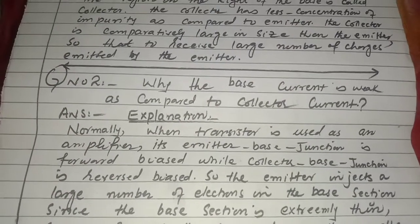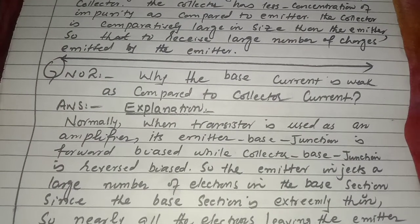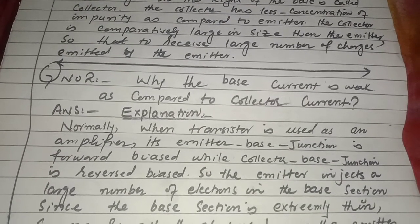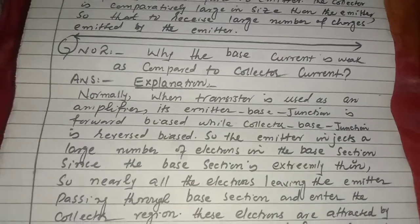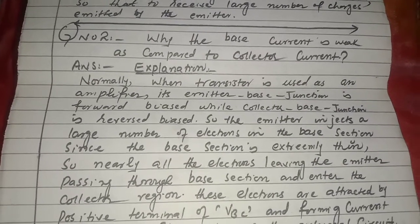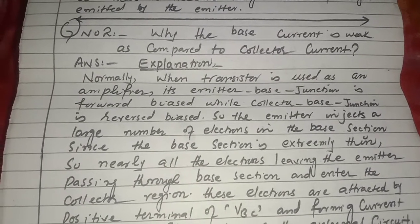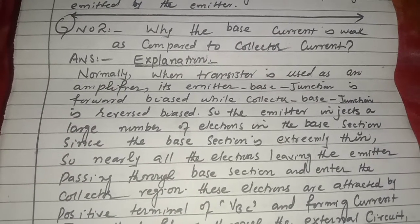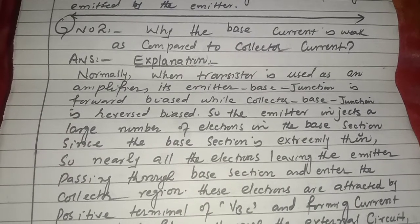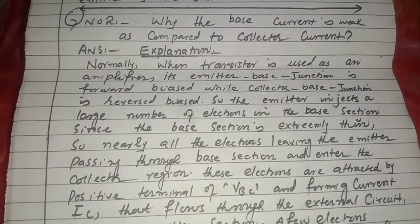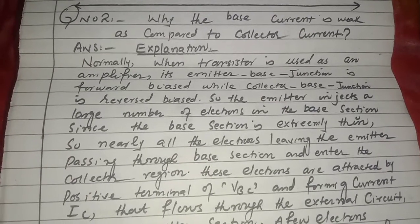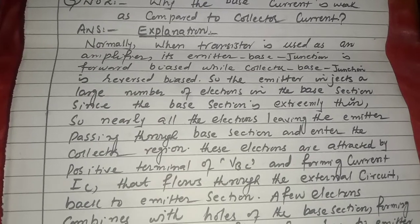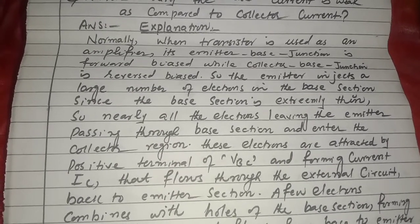Normally, when a transistor is used as an amplifier, its emitter-base junction is forward biased while the collector-base junction is reverse biased. The emitter injects a large number of electrons into the base section. Since the base section is extremely thin, nearly all the electrons leaving the emitter pass through the base section and enter the collector region. These electrons are attracted by the positive terminal of the battery Vbc, forming current IC.